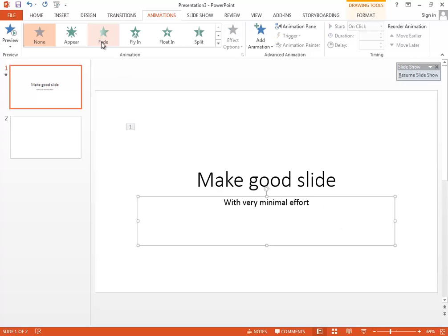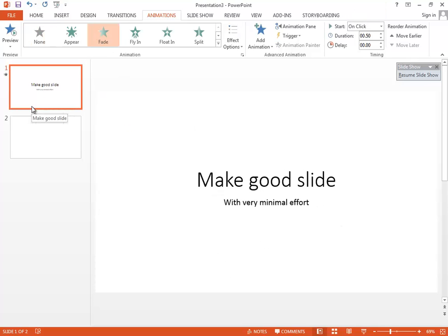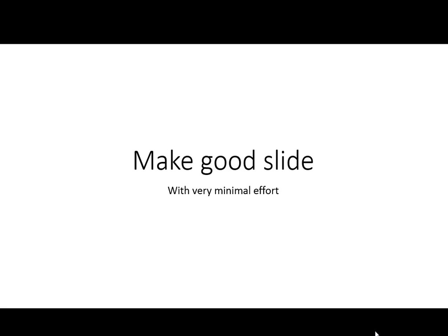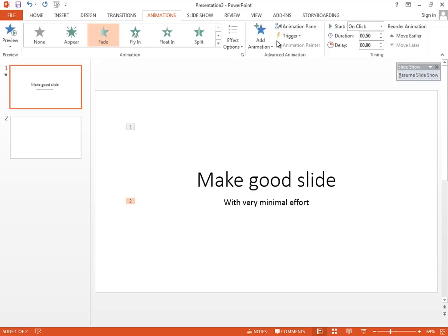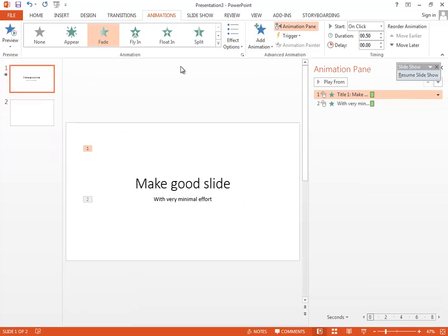If you play the slide, you'll see that first the 'Make Good Slides' title fades in, then the next description comes in. You can also modify the order of animations by going to the 'Move Later' or 'Move Earlier' option, or you can use the Animation Pane to do anything you need.